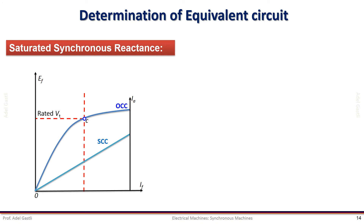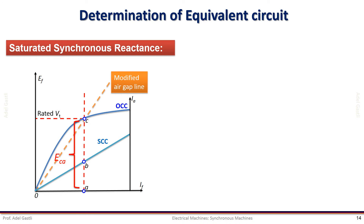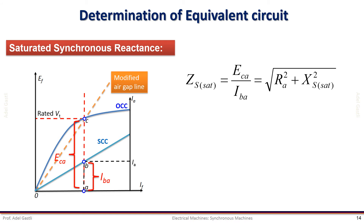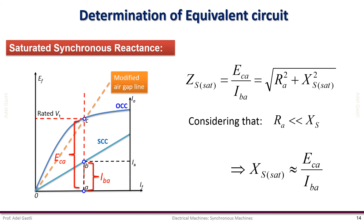For the saturated parameters, we draw a vertical line that intersects the open circuit characteristic at point C. This line crosses the IF axis at point A and crosses the short circuit characteristic at point B. Next we draw the modified air gap line which intersects the open circuit characteristic at point C. Since the rated voltage is ECA and the corresponding short circuit current is IBA, the saturated synchronous impedance is determined using this equation. Again considering that the armature resistance is small compared to the synchronous reactance, we can obtain the saturated synchronous reactance as shown here. So when operating the machine on the saturation part of the magnetization curve, we use this saturated synchronous reactance value.